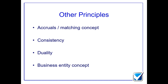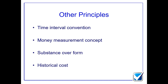Duality says every transaction has a double-entry effect — a debit and a credit — and we'll look at debits and credits in more detail later. The business entity concept says the business itself should be accounted for completely separately from the ownership interest, so even for a sole trader, only the business's transactions are recorded. The time interval convention says financial statements will cover a certain period of time, so the profit and loss account tells you what's happened over that period.